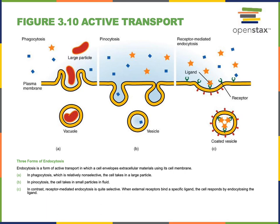Phagocytosis literally translates to cell eating. In phagocytosis, a large particle is engulfed and brought into the cell to be contained within a vacuole. That vacuole can then merge with a lysosome in order to digest the large particle, breaking it down into building block molecules that can be used by the cell to produce other molecules.